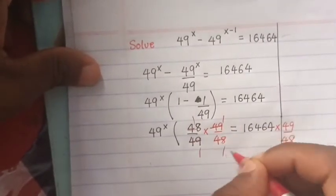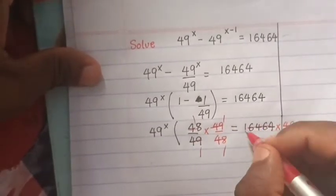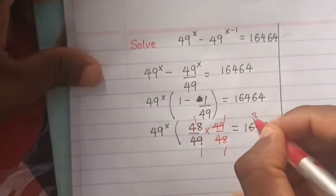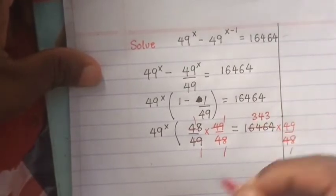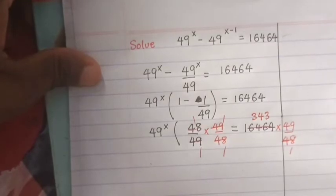This simplifies, and 49^x remains as 49^x, equals 343.